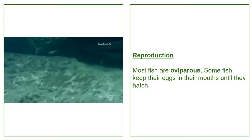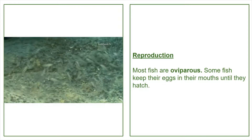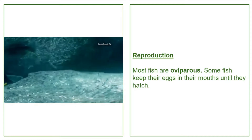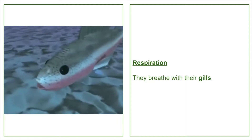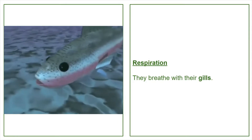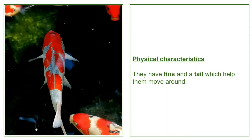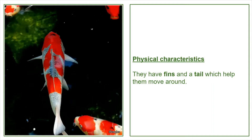Reproduction: most fish are oviparous. Some fish keep their eggs in their mouths until they hatch. Nutrition: fish can be carnivores, herbivores, or omnivores.